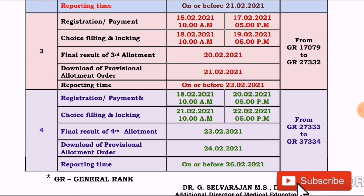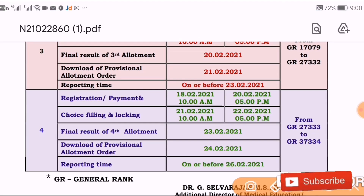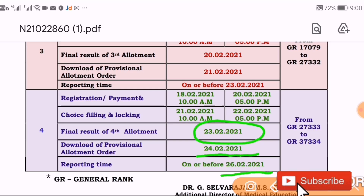If you have an alignment order, you can release and download it. For the last 8th, there are 4th round counseling students. If you have an alignment order, you can report to your college or join.